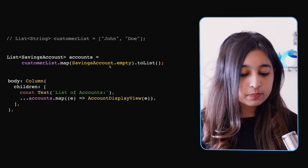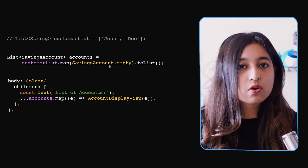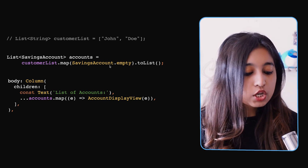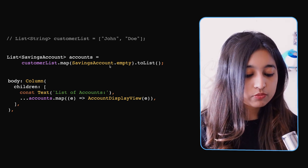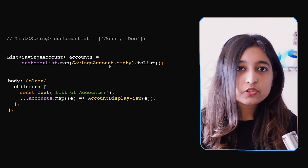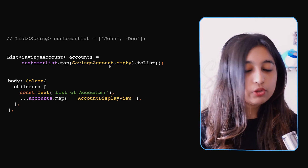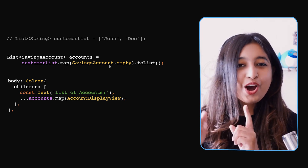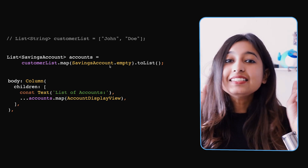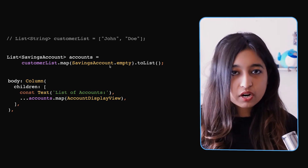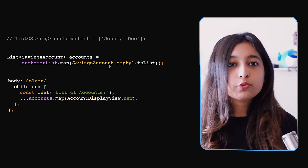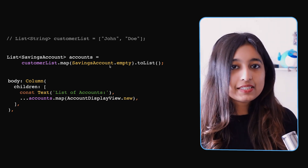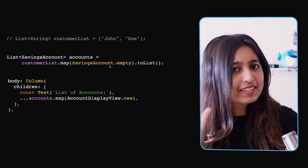In another example with a `Column` widget containing an `AccountDisplayView` that takes a `SavingsAccount` object, you might try to tear off the constructor. However, the Dart compiler treats the class name as a type rather than a constructor. To tell the compiler you're referring to the unnamed constructor and not the class type, you add `.new` — so it becomes `AccountDisplayView.new`.